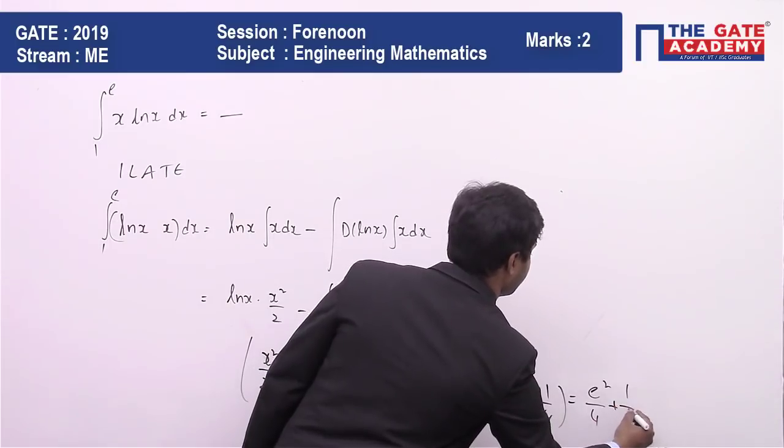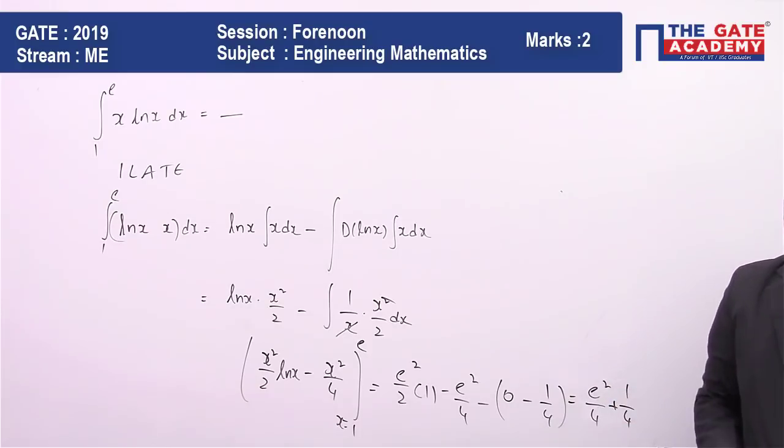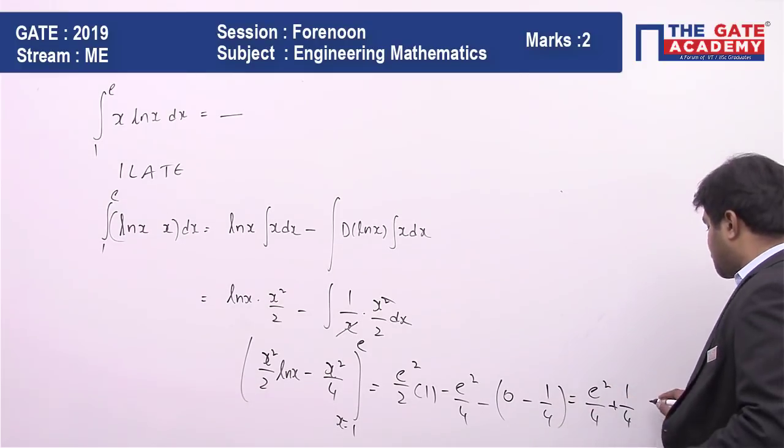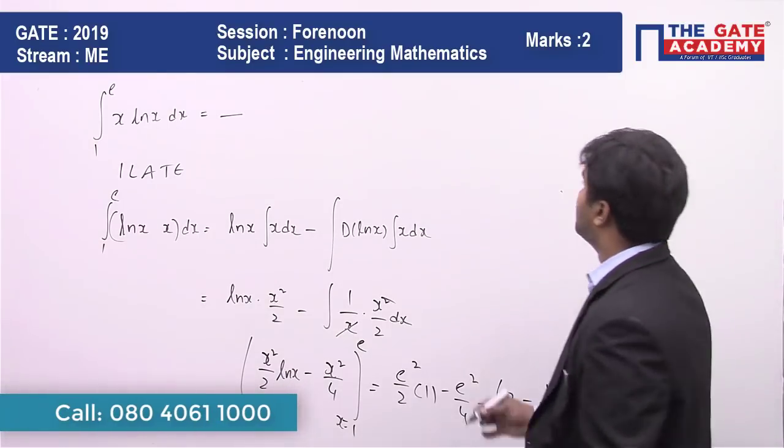Plus 1/4. So e²/4 plus 1/4 is the right answer. You can verify it. The answer for this question is going to be equal to 2.09.